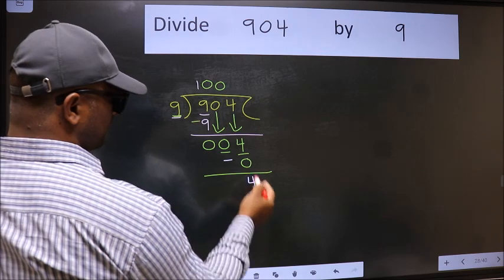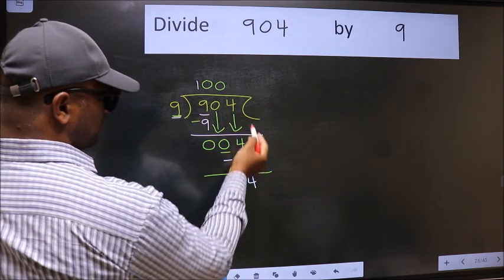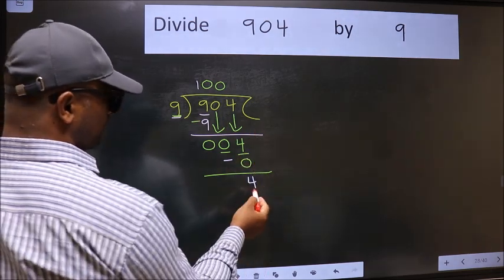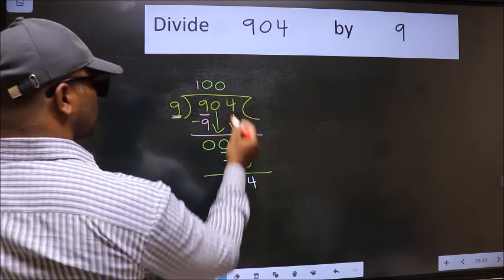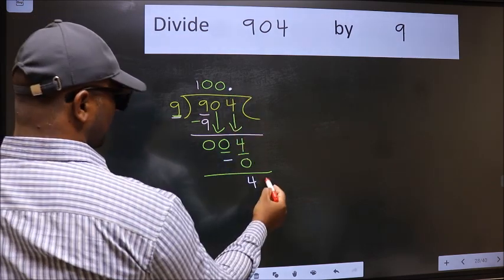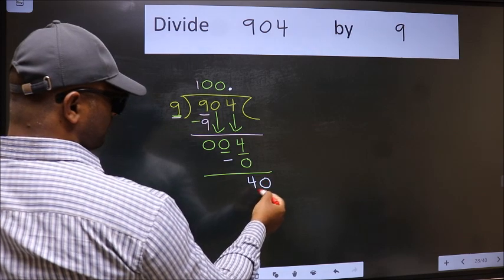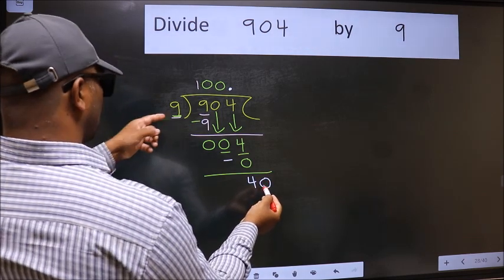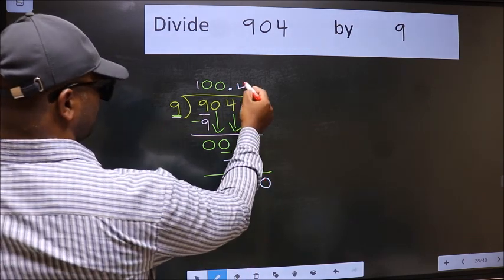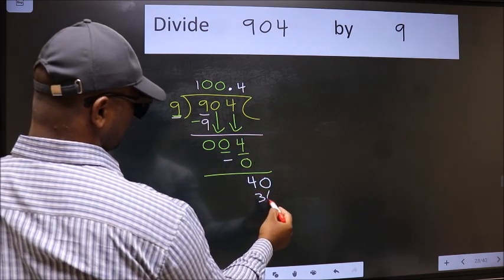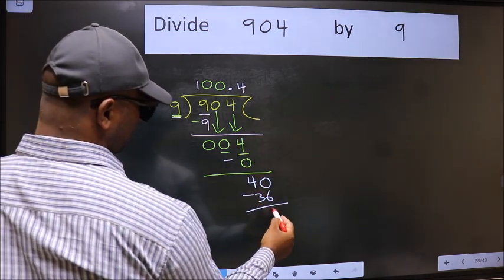Over here, we did not bring any number down. And 4 is smaller than 9. So now we can put dot and take 0. So 40. A number close to 40 in the 9 table is 9 fours, 36. Now we should subtract. We get 4.